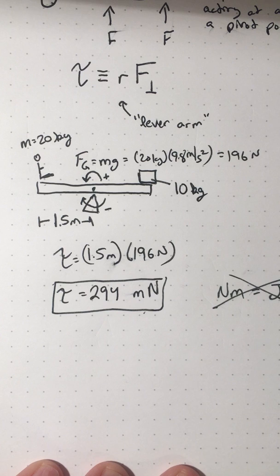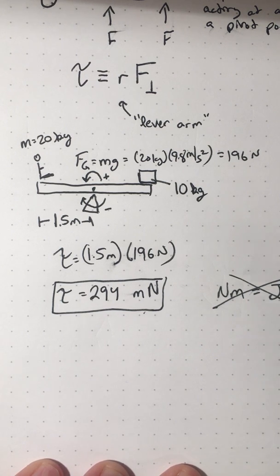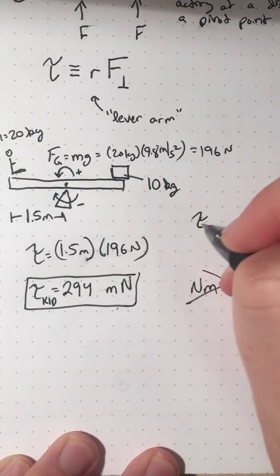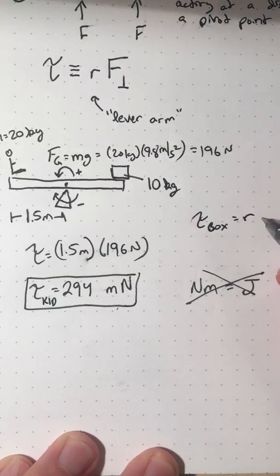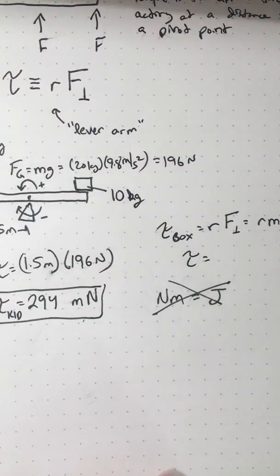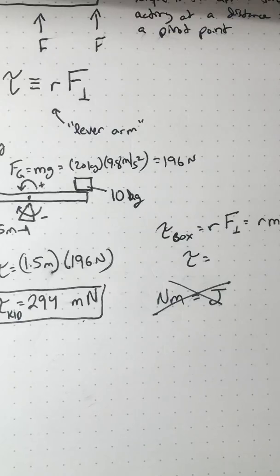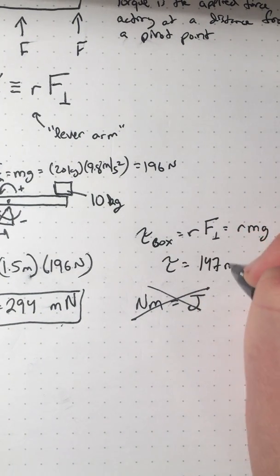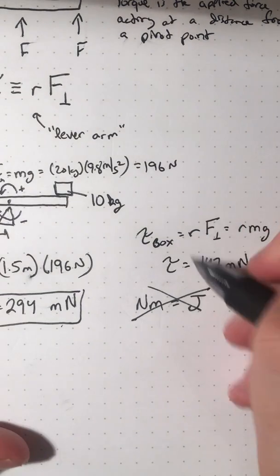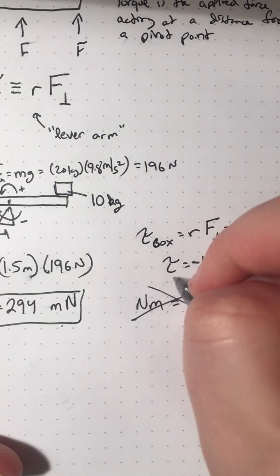So if I were then to say, what's the net torque on this seesaw now? I can say I found that the torque of the kid is 294 meters newtons. If I found the torque of the box here, it would be the radius or the lever arm times the perpendicular force, which in this case is going to be mass times gravity again, because it's R times mg. So the torque on the box is going to be a radius of 1.5 times a mass of 10 times 9.8. I'm getting that that comes out to be 147 meters newtons. But since this box is making the thing want to rotate clockwise, it's making it want to go this way. This is actually going to be a negative 147 meters newtons. So that's going to be the torque of the box.